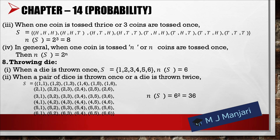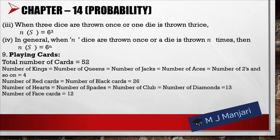Eighth, throwing dice: when a die is thrown once, S = {1, 2, 3, 4, 5, 6}, so number of outcomes = 6. When a pair of dice is thrown once or a die is thrown twice, total outcomes = 6² = 36. When 3 dice are thrown once or 1 die is thrown thrice, number of outcomes = 6³. In general, when n dice are thrown once or a die is thrown n times, number of outcomes = 6ⁿ.